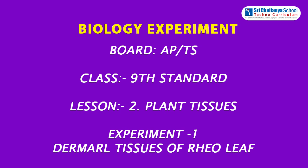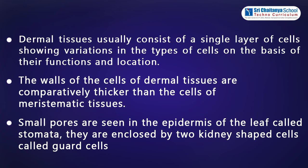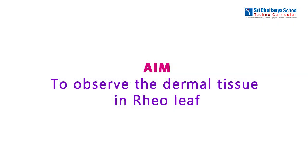Today we are going to conduct an experiment on dermal tissue. Dermal tissue — 'dermis' means outermost layer. Dermal tissue usually consists of a single layer of cells showing variations in the types of cells on the basis of their functions and location. The walls of dermal tissue cells are comparatively thicker than those of meristematic tissue. Small pores seen in the epidermis of the leaf are called stomata, enclosed by two kidney-shaped cells called guard cells.